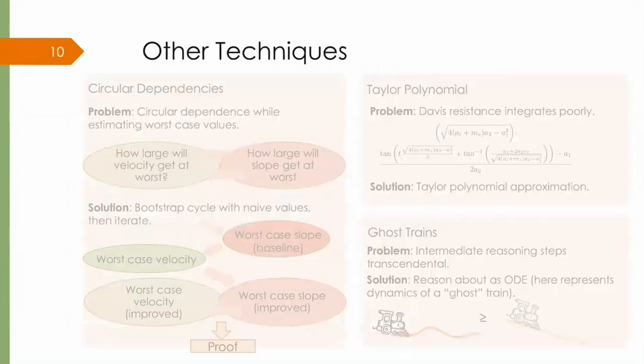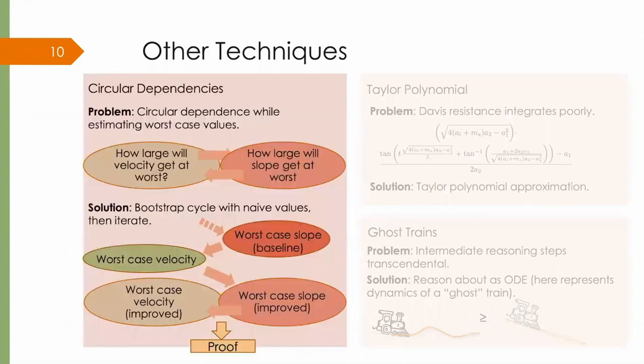I will now highlight some of the other generalizable design and proof techniques we used in the paper. The first is a method to resolve circular dependencies. While designing the controller, we need to predict provable bounds on the variables of motion. But often, these variables depend on each other. For example,